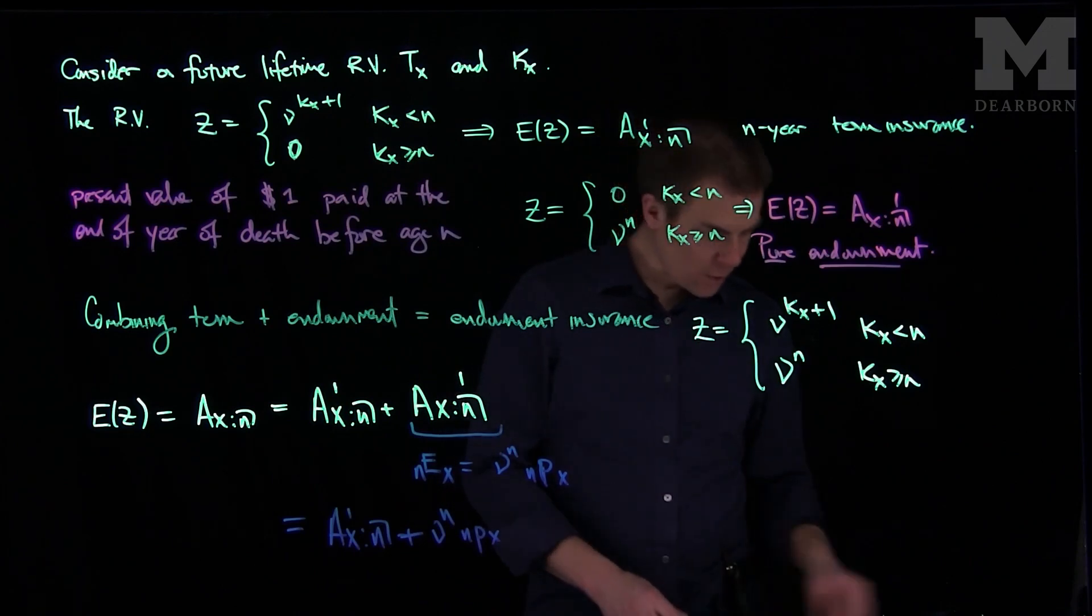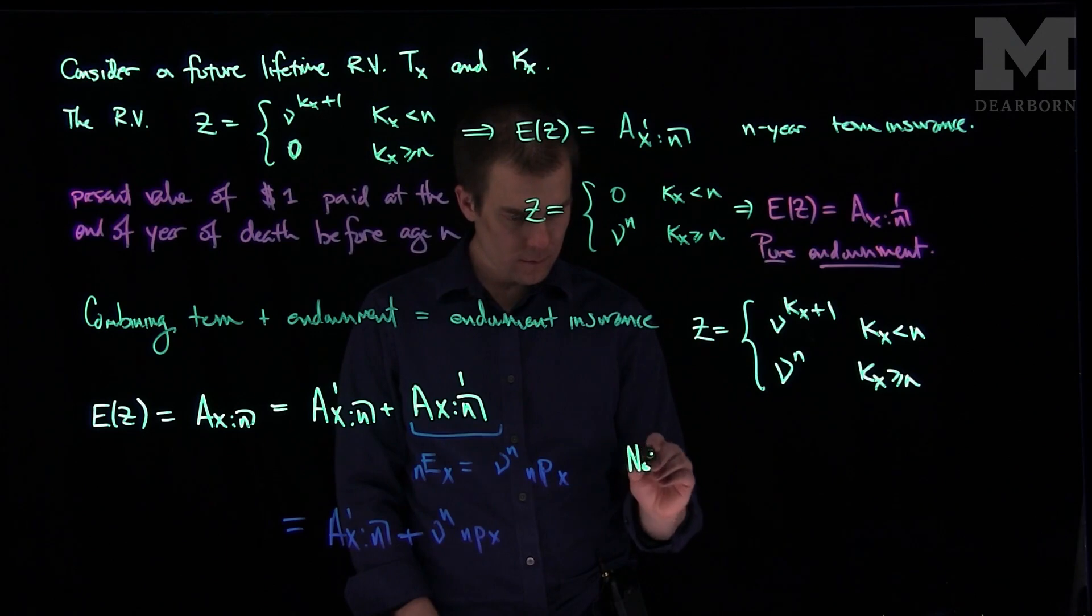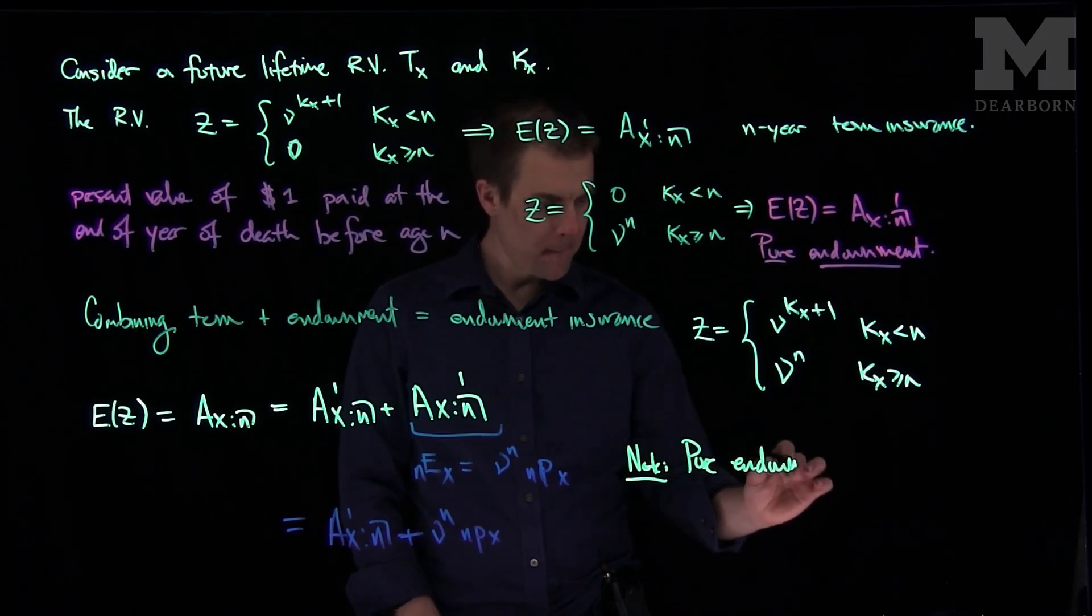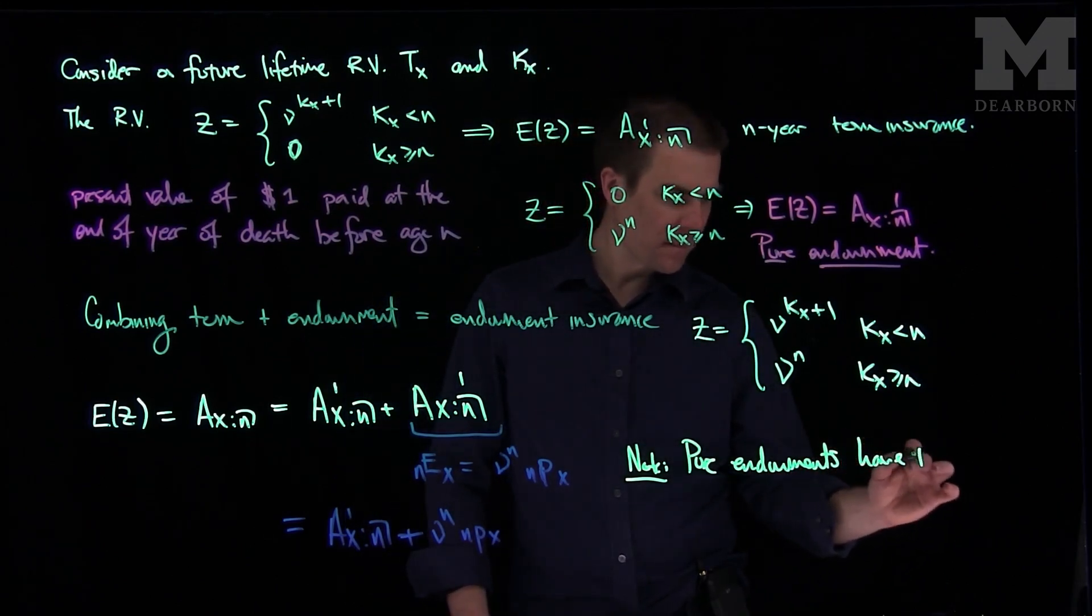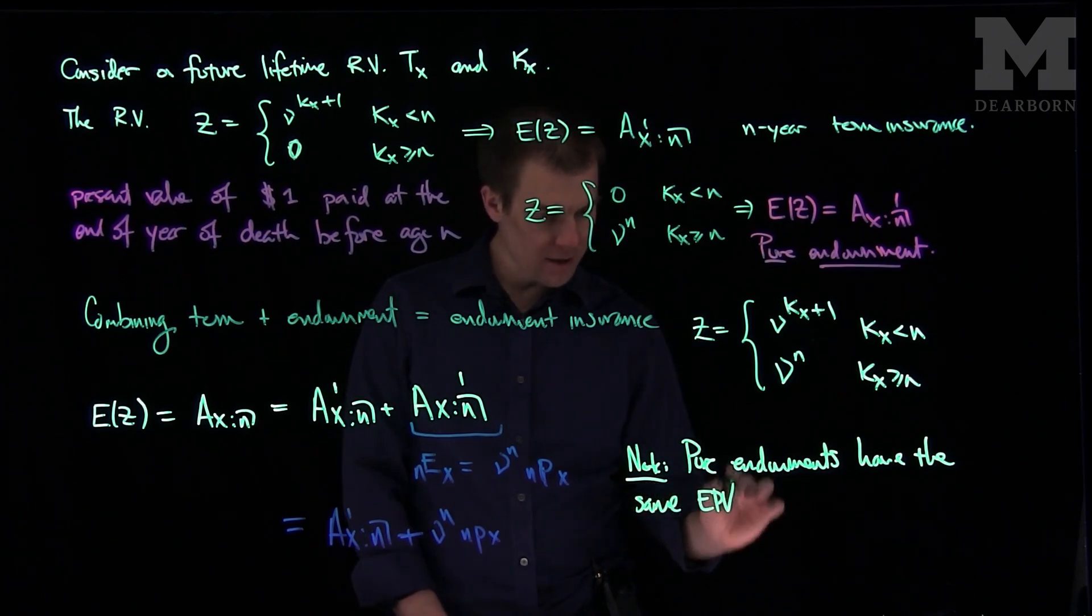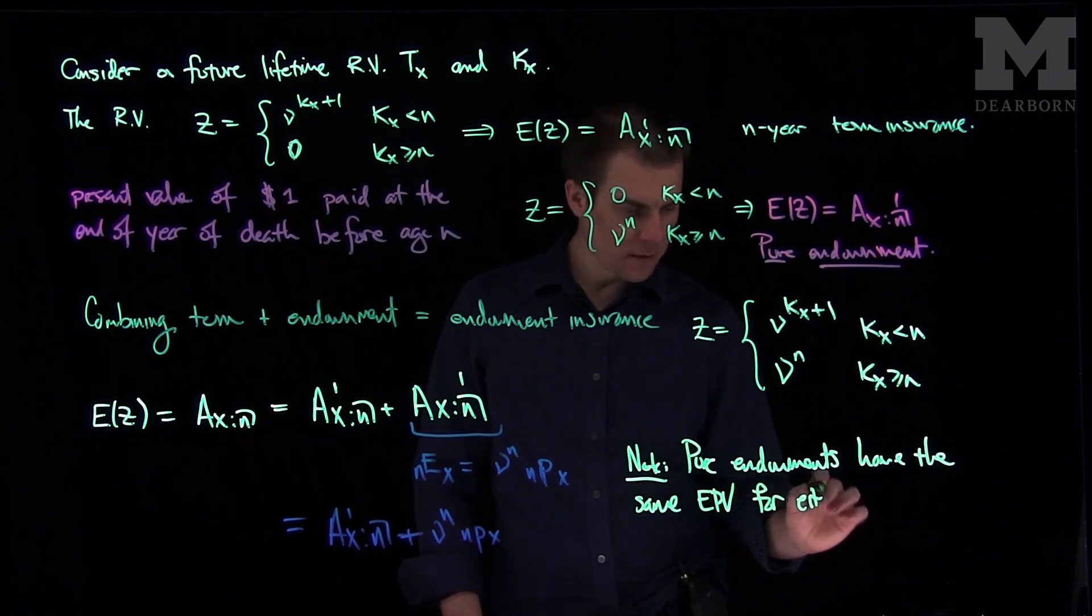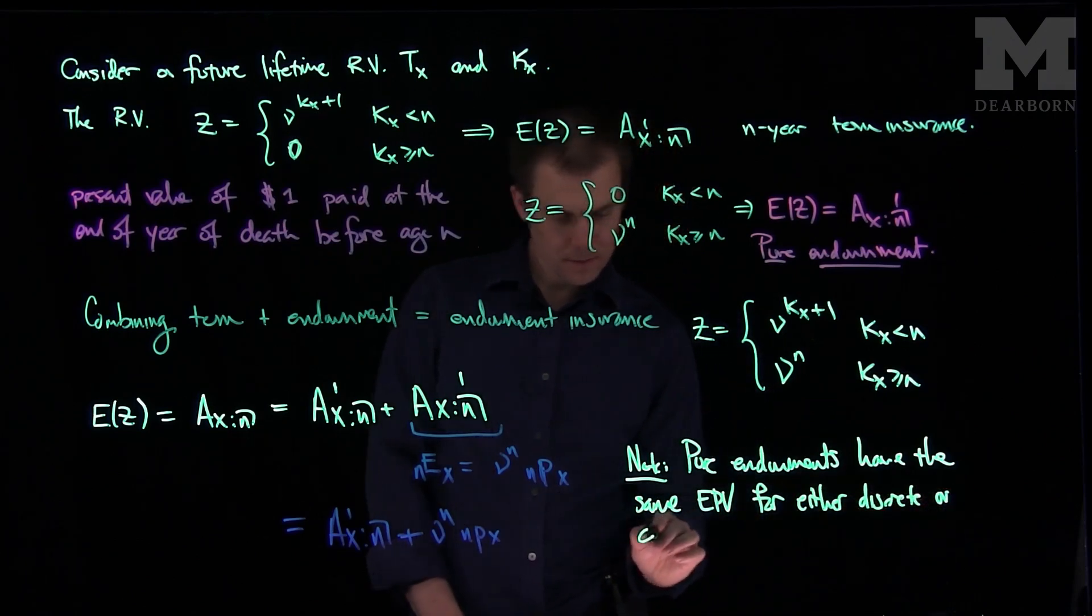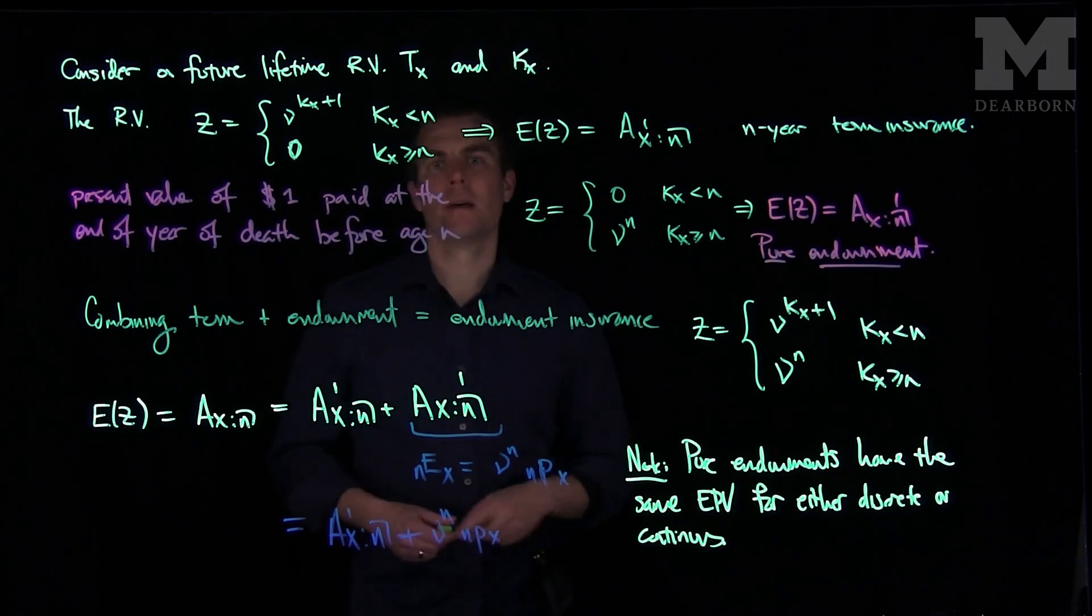And what we can do is we can note, so just a remark about pure endowment insurance. So pure endowments have the same expected present value for either discrete or continuous. Thank you very much.